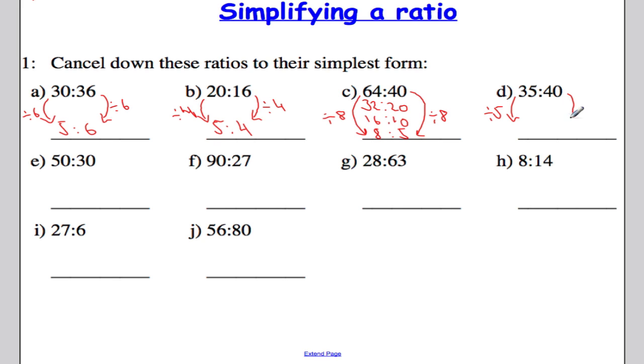So I'm going to divide both sides by 5. 35 divided by 5 gives me 7. And 40 divided by 5 gives me 8. And that's it in its simplest form.